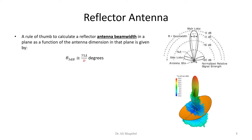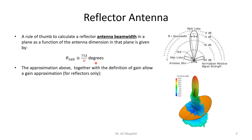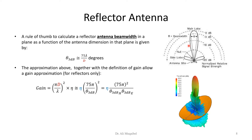For the reflector antenna we can give more examples about how the antenna beam width is related to its dimensions and directivity. A rule of thumb to calculate the reflector antenna beam width uses the following equation. All these parameters are related — once we specify the antenna, give me the diameter, give me the wavelength it operates at, and we can estimate how much is the 3 dB beam width for that antenna.